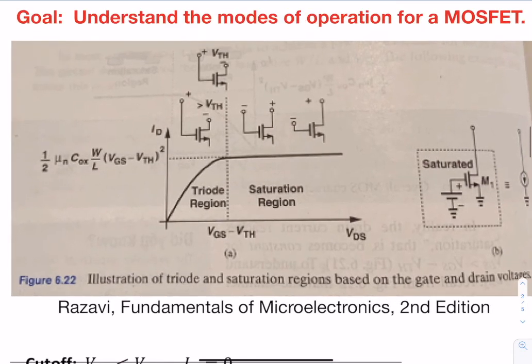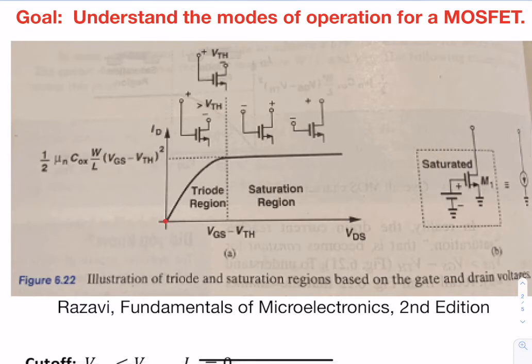Now we want to understand the modes of operation for a MOSFET. Again, there's going to be three modes of operation. There's going to be cutoff, which is just when it's off. So that will be here at zero.